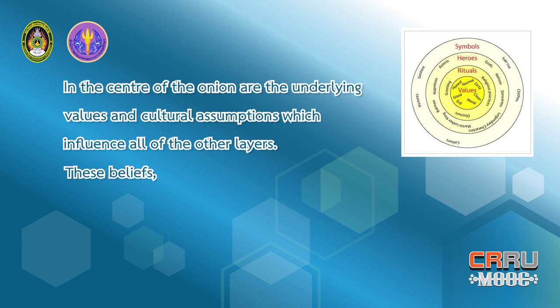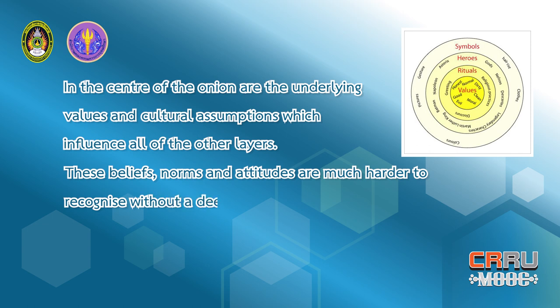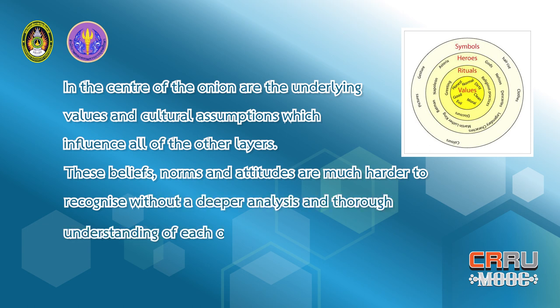In the center of the onion are the underlying values and cultural assumptions which influence all of the other layers. These beliefs, norms, and attitudes are much harder to recognize without a deeper analysis and thorough understanding of each of these layers and how they interact. To make it clear, let me explain in short and give more examples of each layer.